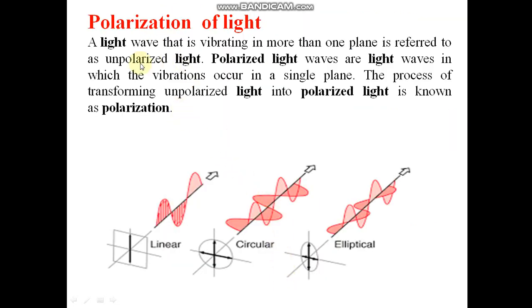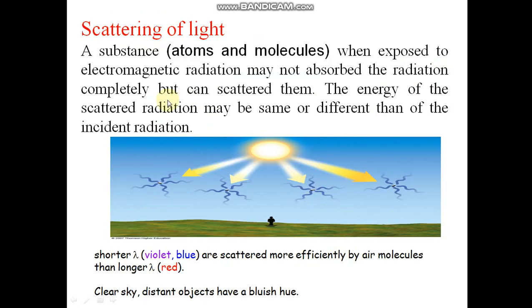Polarization of light. A light wave that is vibrating in more than one plane is referred to as unpolarized light. Polarized light waves are light waves in which the vibrations occur in a single plane. The process of transforming unpolarized light into polarized light is known as polarization. This is linear polarization, circular, and elliptical.